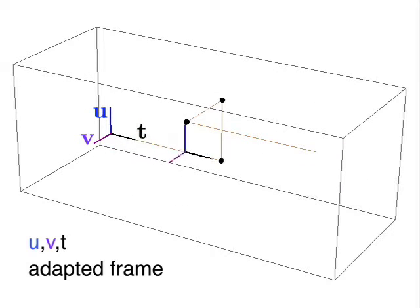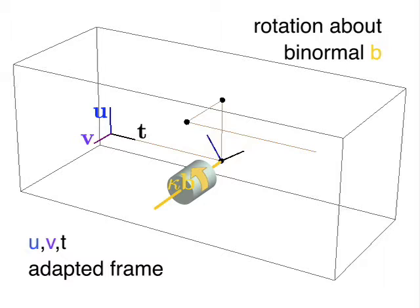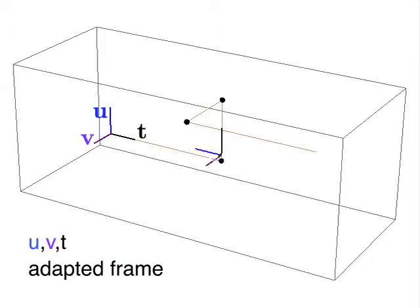We define parallel transport along discrete curves analogously to the smooth case as rotations about the binormals at vertices, which transport vectors along the curve without twist.